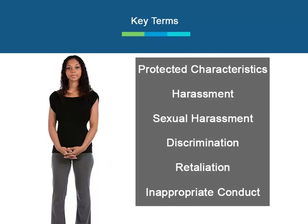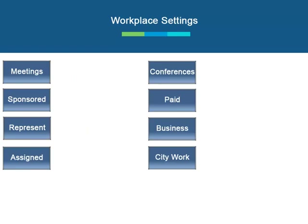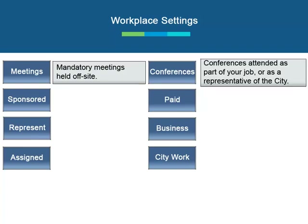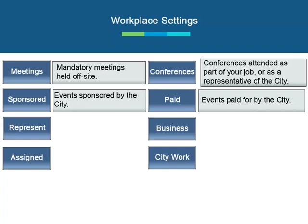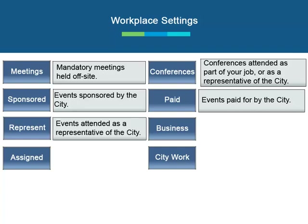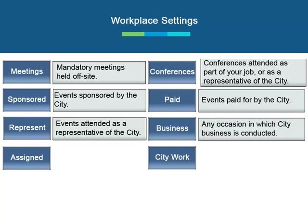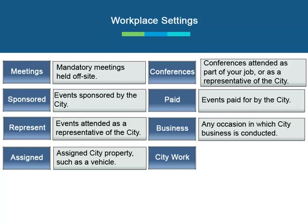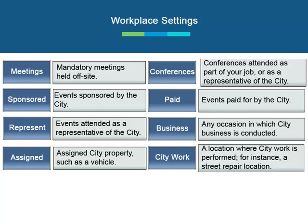Knowing these key terms will help you identify and avoid inappropriate behavior. It is your responsibility to follow the city's rules at workplace settings. According to the HR 2.02 rule, anywhere you perform any part of your job is a workplace setting. If you are representing the city, all workplace rules apply even if you are at an off-site location. Some examples include mandatory meetings held off-site, conferences attended as part of your job or as a representative of the city, events sponsored or paid for by the city, events attended as a representative of the city, any occasion in which city business is conducted, assigned city property such as a vehicle, and a location where city work is performed, for instance a street repair location.